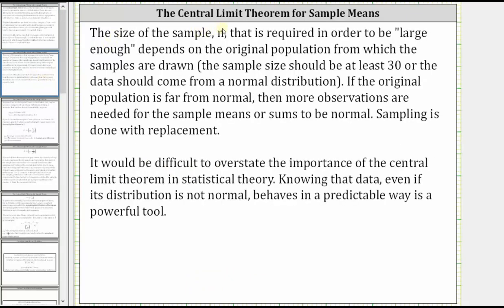The size of the sample n that is required in order to be large enough depends on the original population from which the samples are drawn. The sample size should be at least 30, or the data should come from a normal distribution. If the original population is far from normal, then more observations are needed for the sample means or sums to be normal. Sampling is done with replacement.